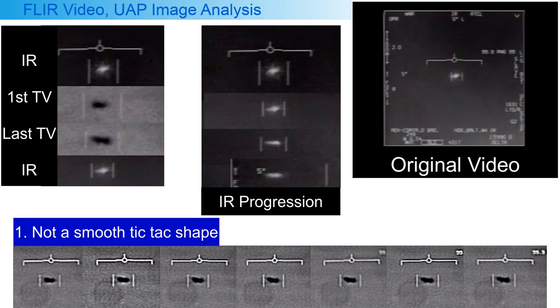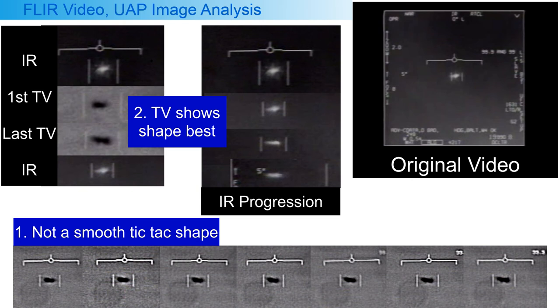First, I still think the object in this video is not a completely smooth tic-tac shape. Second, I think the TV image gives a better idea of the shape than the IR image, which I think does not show the whole object.